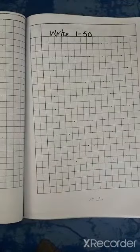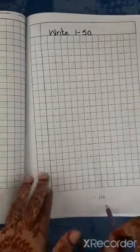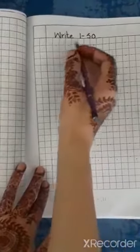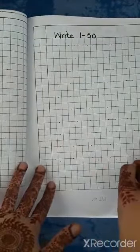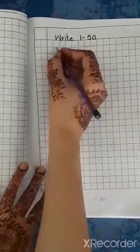Students, you all have got your summer task. Now open page number 111. Write down 1 to 50. 1 to 50 counting लिखनी है हमने 1 to 50 तक. Start writing.